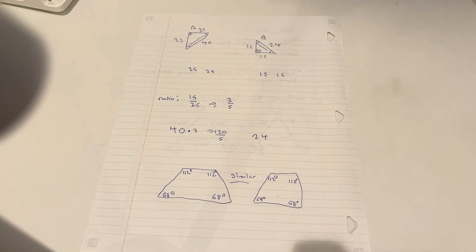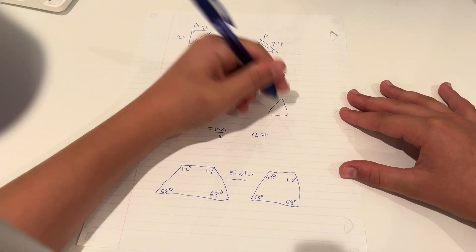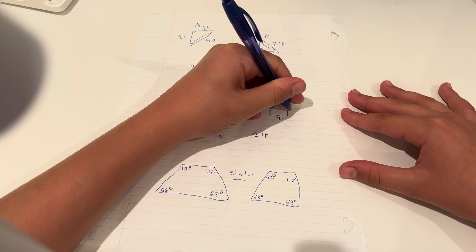And you can actually use this if you don't know side lengths, you can use the fact they're similar to assume sides. So we have a triangle that's 1, 2, and 3.